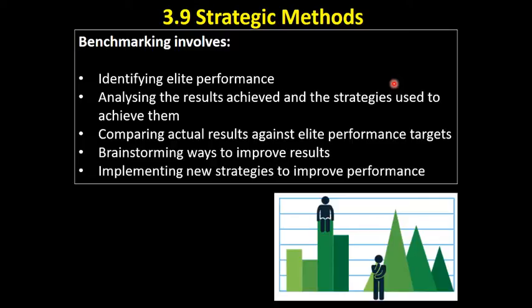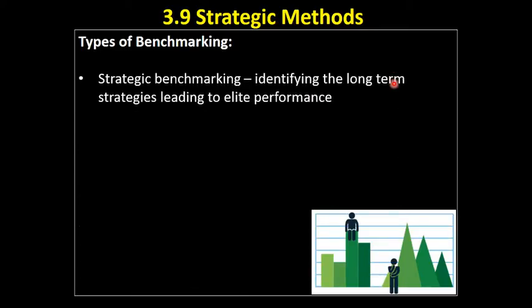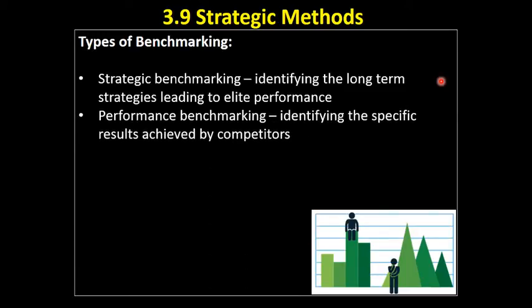From that brainstorming we want to come up with new strategies that will improve our performance to get closer to that elite performance level. There are different types of benchmarking. Strategic benchmarking looks at all businesses, regardless of industry, examining the long-term strategies these organizations have used to achieve elite performance — what HR strategies they're using, what their marketing looks like — things that apply no matter what industry we're in.